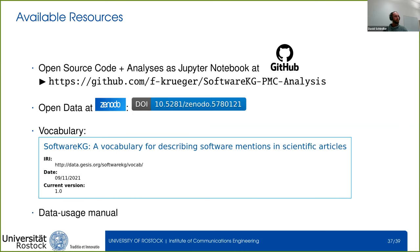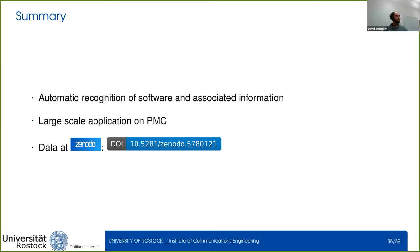We created a lot of resources during this work: the source code including all analyses as a Jupyter notebook published at GitHub; all created data published at Zenodo; and a vocabulary available from the GESIS website. We also added a short introduction on how to work with the data to get you quickly started for your own analysis. To summarize, we created automatic recognition of software and associated information in scholarly articles and applied it on a large scale to PubMed Central, making all the data available at Zenodo.